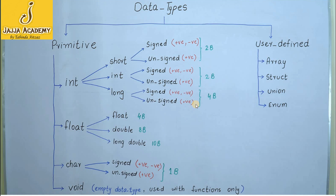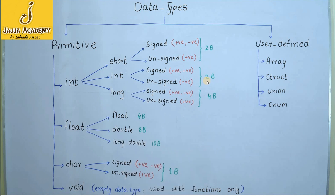Now let us see how much memory is consumed by these data types. Short data type, whether signed or unsigned, consumes 2 bytes in memory. Integer or int, whether signed or unsigned, also consumes 2 bytes in memory, though this may vary from 2 to 4 bytes depending on system specifications and the compiler being used. Long int consumes 4 bytes in memory — both signed long and unsigned long occupy 4 bytes.